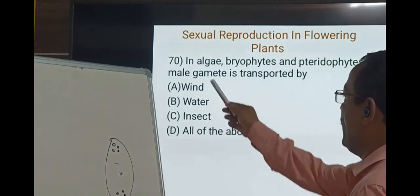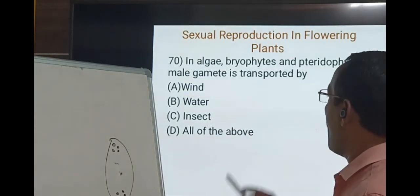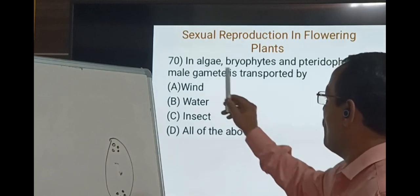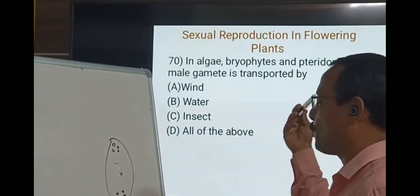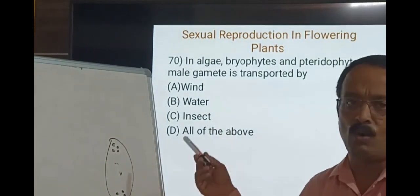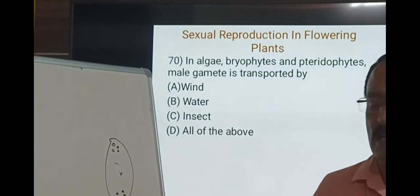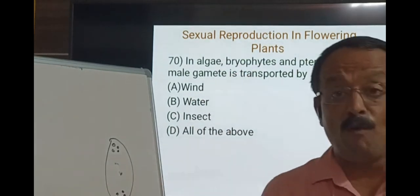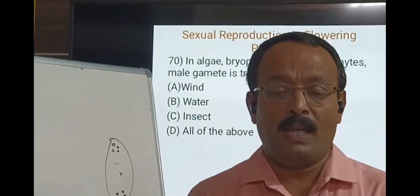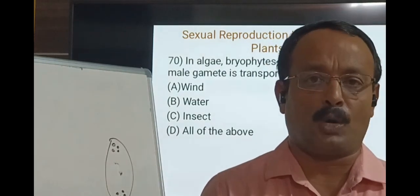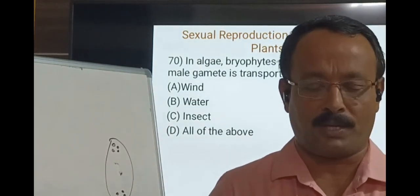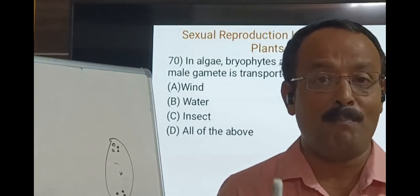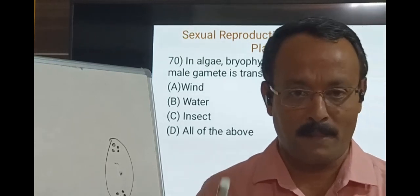Question 70. In algae, bryophytes, and pteridophytes, male gametes are transported by water. Bryophytes invariably need water to complete their sexual reproduction, so bryophytes are often called amphibians of the plant kingdom.